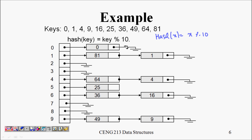4 mod 10 = 4, so 4 goes into that linked list. 9 mod 10 = 9, so 9 goes to cell 9. 16 mod 10 = 6, so 16 goes to cell 6. 25 mod 10 = 5, so 25 goes to cell 5.